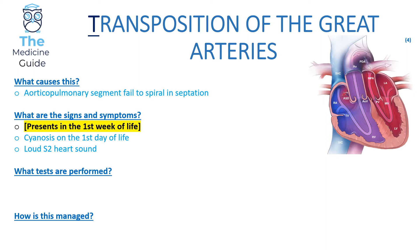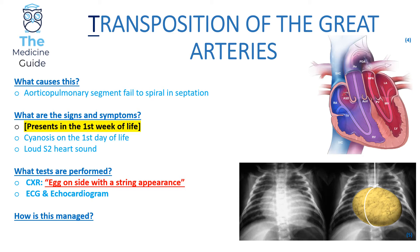Investigations include chest X-ray, ECG, and echocardiogram. The chest X-ray in Transposition of the Great Arteries is very classical — described as an 'egg on its side with a string' appearance, showing a very narrow upper mediastinum and a cardiac shadow. Management involves prostaglandin infusion to maintain patency of the ductus arteriosus, with surgery as definitive management.